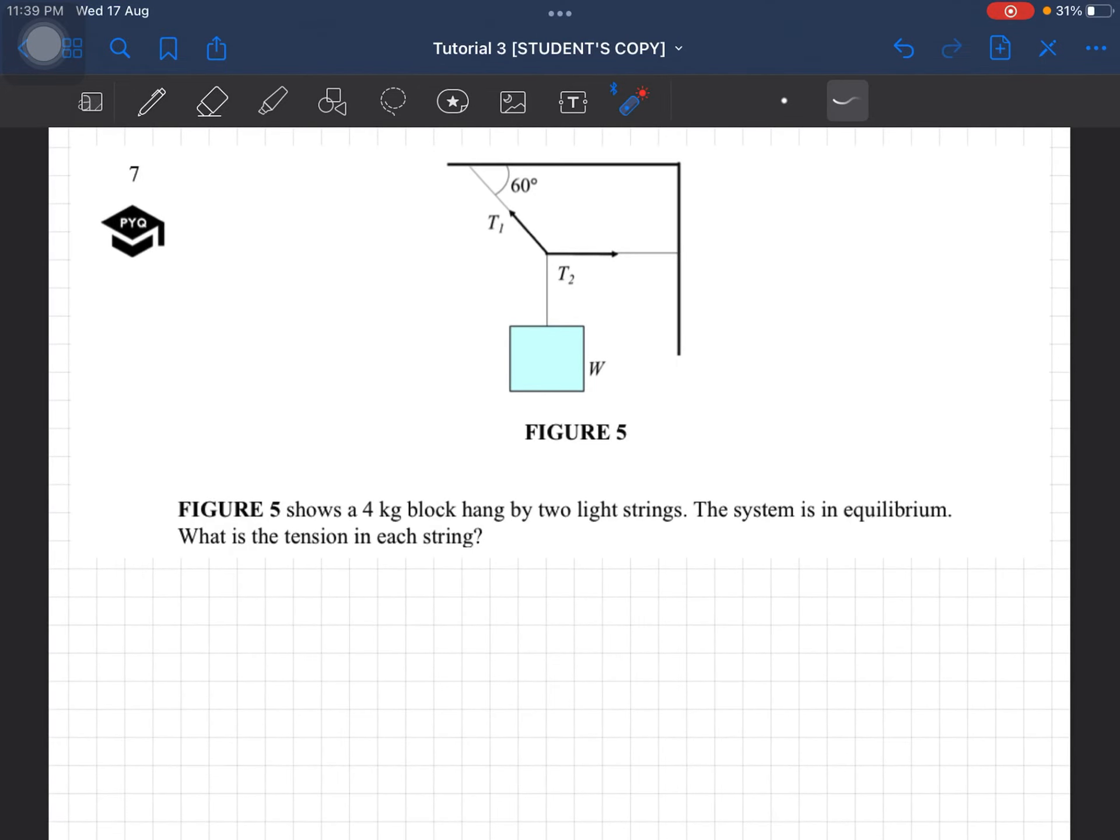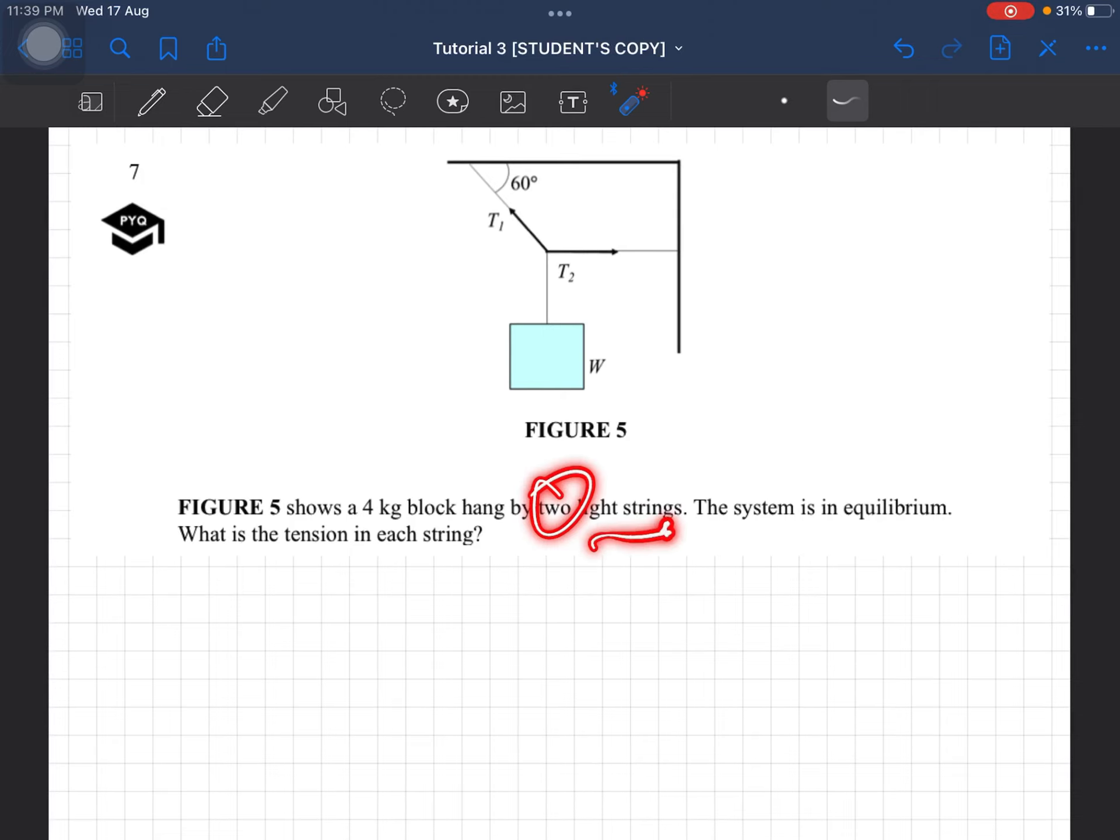Question number 7. So this one under tension. The figure shows a 4kg block hanged by 2 light strings. So there's 2 light strings. So what does this tell us is there is 2 different strings.